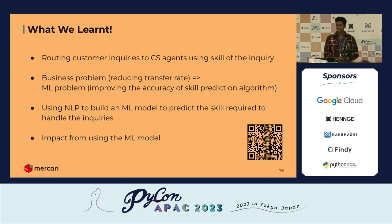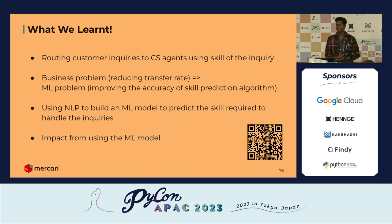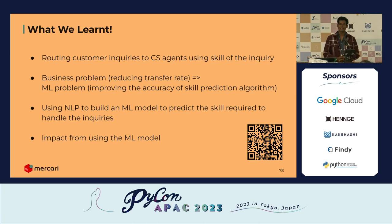In this talk, we saw how to route customer inquiries to CS agents using skills, discovered the business problem of reducing transfer rate, translated it into a machine learning problem of improving skill prediction accuracy, built an NLP and ML model to predict skills, and saw the positive impact from our A/B test results. I'm happy to share the work done by our team on this problem and answer any questions.